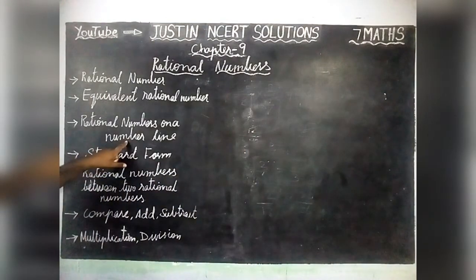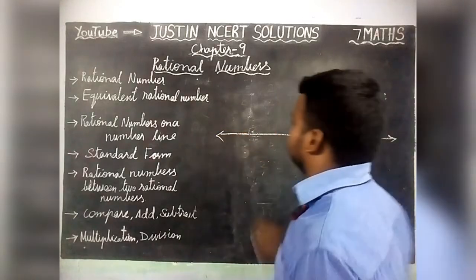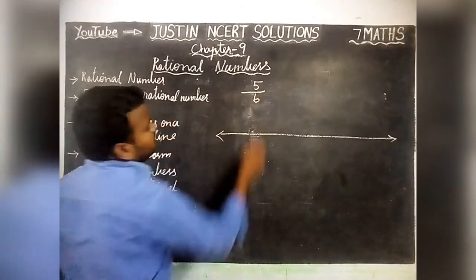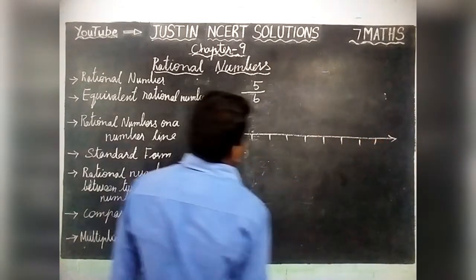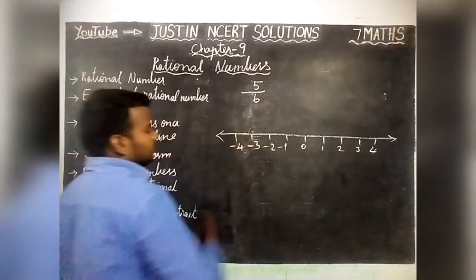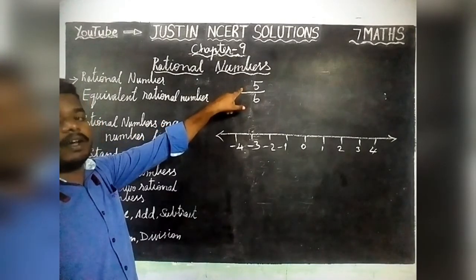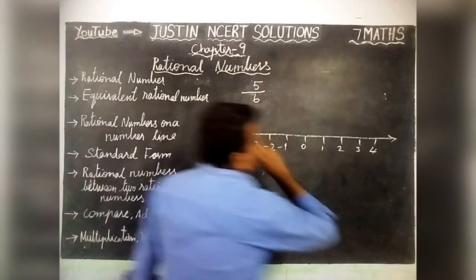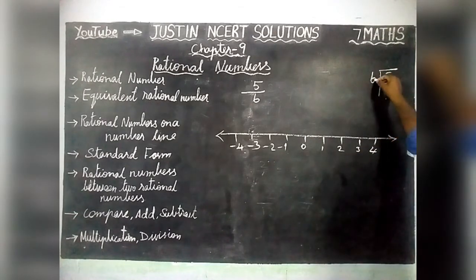Next, we will see Rational Numbers on a Number Line. We will take the number 5 by 6. On a standard integer number line, 5 by 6 does not have a separate place. So 5 by 6 is coming between 0 and 1. We can check: 5 is not divisible by 6, so we compute it as a decimal — 0.8 something — which is between 0 and 1.